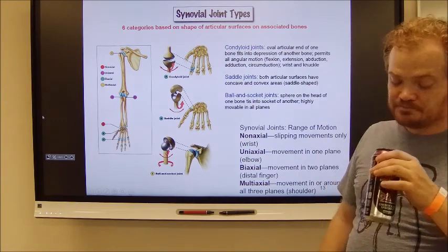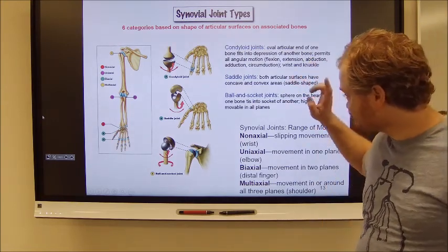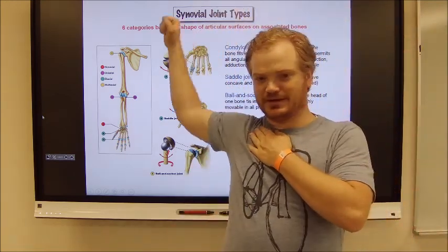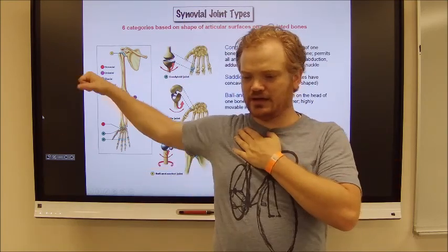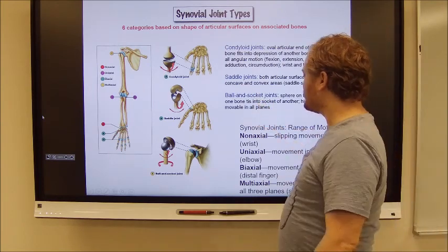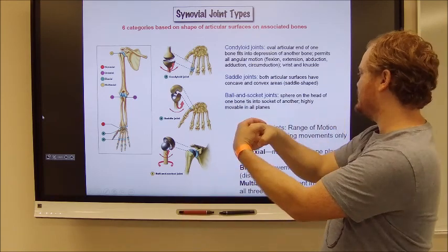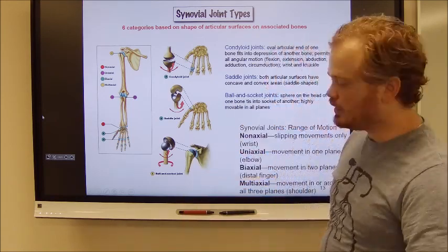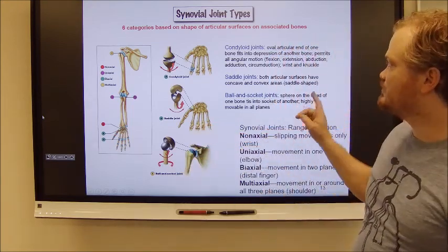And last but not least, ball and socket joints. Ball and socket joints display all the range of motion — you can rotate them this way, come this way, up and down. It's multiaxial. A ball and socket joint is where you have a sphere on the head of the bone and it fits into the socket of another bone, moving in all planes. That is a ball and socket joint displaying the widest range of motion — multiaxial.